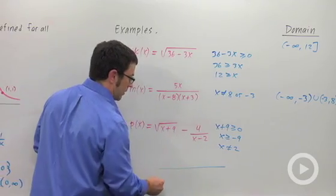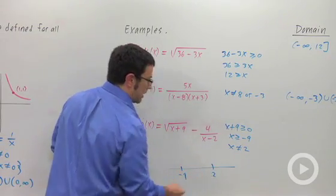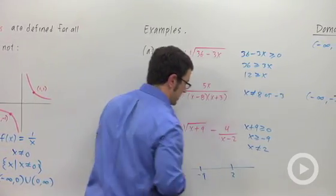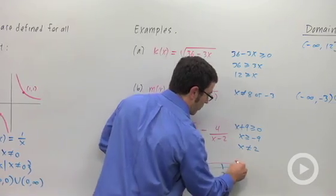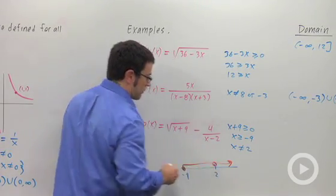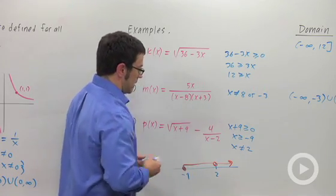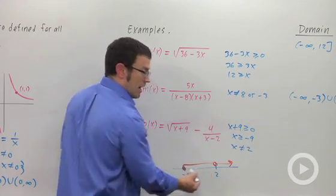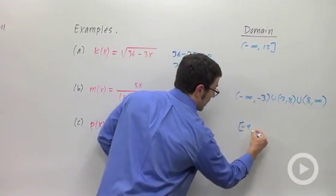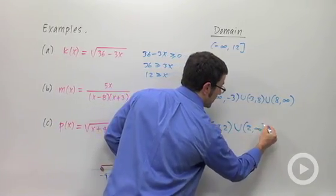Now, if I draw a little number line here, I'll put negative 9 right there, and I'll put 2 to the right. x greater than or equal to negative 9 refers to these numbers, here and forward. But I have to avoid 2, so I have to put a little hole here. Let's express this set in interval notation. We'd have the numbers between negative 9 and 2, so negative 9 to 2 not including 2, union the numbers from 2 to infinity.